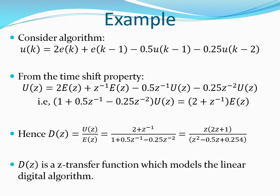Let's consider here a digital algorithm given in the form of a difference equation. Using the properties of the Z-transform, we transform the difference equation into the Z-domain. Then using algebraic manipulations, we obtain the ratio U(z) over E(z) and that ratio U(z) over E(z) is equivalent to the Z-transfer function of the digital algorithm. The Z-transfer function of the algorithm is expressed as D(z).